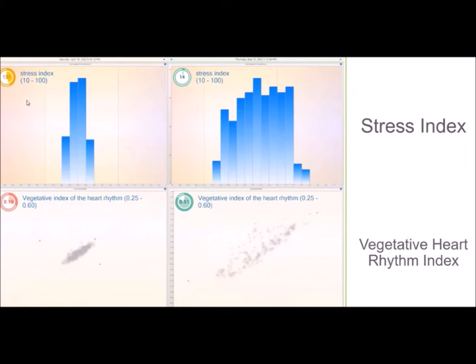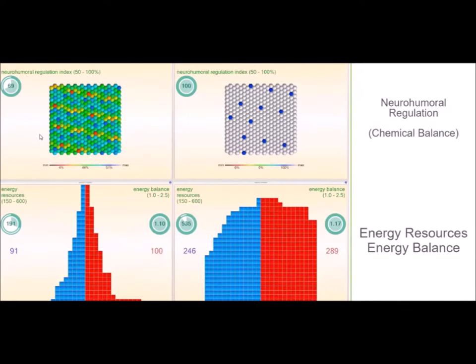Now let's look at the energy resources at the bottom. A healthy range is from 150 to 600. The subject has an energy level of 191 before using the Cloud.